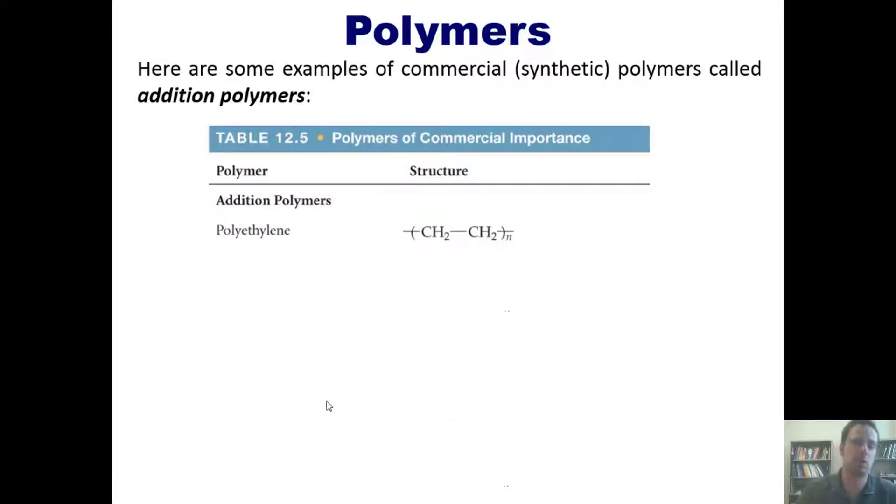So here are a few examples of commercial or synthetic polymers called addition polymers. Polyethylene is one of them that we've already looked at. Another one is called polypropylene. Notice that the only difference is that it's got this cute little CH3 group dangling off of the chain. Polystyrene has this six-membered ring, and each of these points in this hexagon represents a carbon atom that's got a double bond, then a single bond, then a double bond, then a single bond, all the way around it. There are hydrogens attached to it as well.